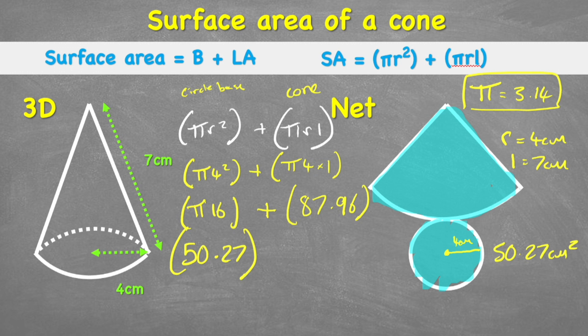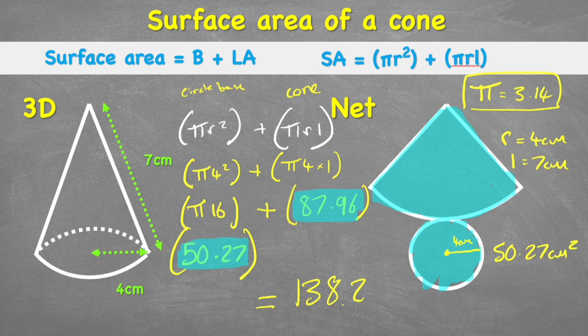So now I've got the area of the circle and the area of the cone shape, and I need to add them together. So 87.96 plus 50.27 gives me a total of 138.23. Remember to put back the units — centimeters squared. And there we go, simple as that. That's how to find the surface area of a cone.